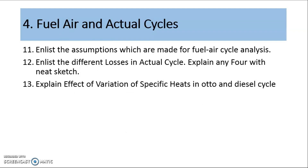From unit 4, that is fuel air and actual cycles, there are two to three questions. First is what are the different assumptions made for the analysis of fuel air cycles. You also need to discuss the variations of specific heat in the Otto as well as the Diesel cycle. The most important question is how the actual cycle differs from the ideal cycle, what losses are considered in the analysis of the actual cycle, and you need to explain any one loss of the actual cycles.